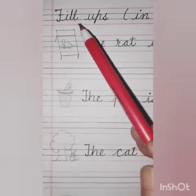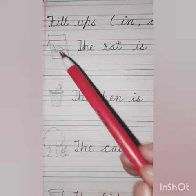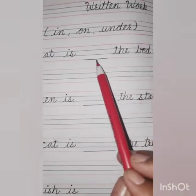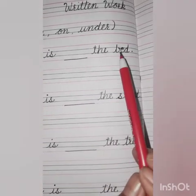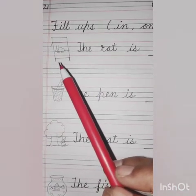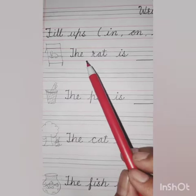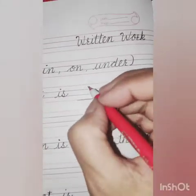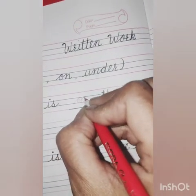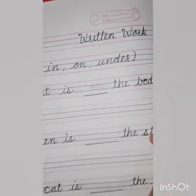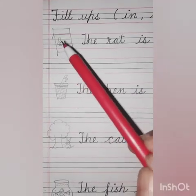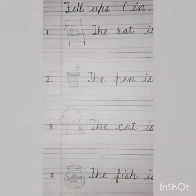First, look at the picture. The rat is dash the bed. Tell me, where is the rat? Yes. The rat is on the bed. O-N. On. Rat kahan pe hai? Rat bed ki upar hai.